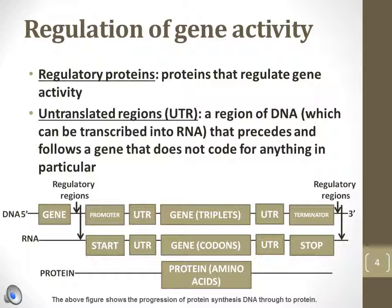Regulatory proteins are proteins that regulate gene expression. Some work by methylating the promoter region, while others acetylate histones to regulate gene expression. The untranslated regions, or UTRs, are those between the promoter region and gene, and the terminator region and gene. The UTRs do not code for a protein product.